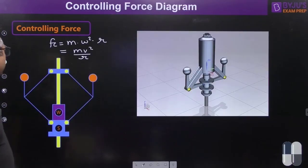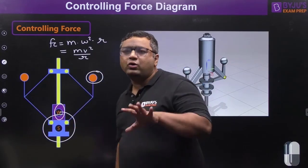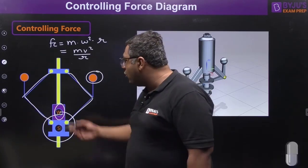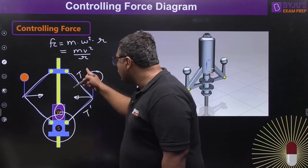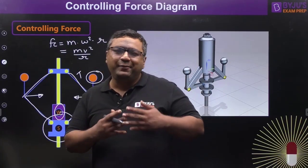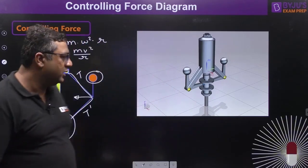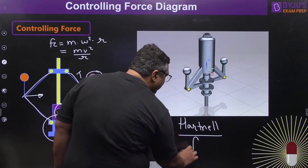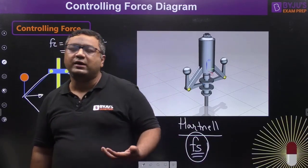In the Porter and Proel governors, the fly balls have mass and the sleeve also has weight. So tension is present in both the arms and the links, and both provide a component of the required centripetal force. That is why Porter and Proel governors can work at higher speeds — two tensions supply the necessary centripetal force. In the Hartnell governor, spring force is added, enabling it to work at very high speeds.